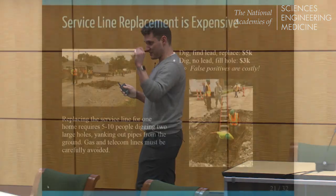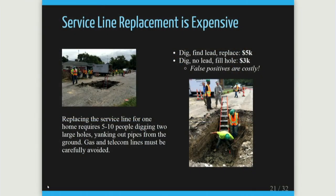Service line replacement is expensive. Replacing one home service line can cost more than $5,000, but the standard negotiated cost in Flint is about $5,000 per home. If they dig and find copper pipes, it still costs $3,000 because you had to hire all those contractors. False positives are very costly. Almost 20% of the replacements have failed in that they found copper, so it's really important to be accurate.